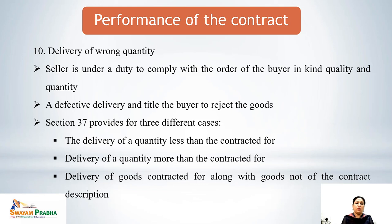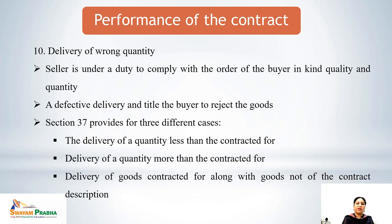Delivery of wrong quantity: if the seller delivers the wrong quantity or quality, the buyer may reject the whole contract. Section 37 provides three cases: delivery of a quantity less than contracted for; delivery of a quantity more than contracted for; and delivery of goods contracted for along with goods not matching the contract description. In all three cases, the buyer may treat it as defective delivery and reject the goods.